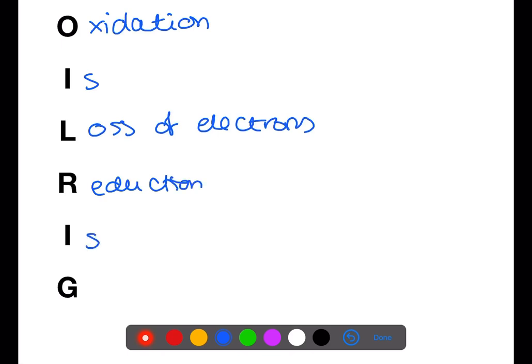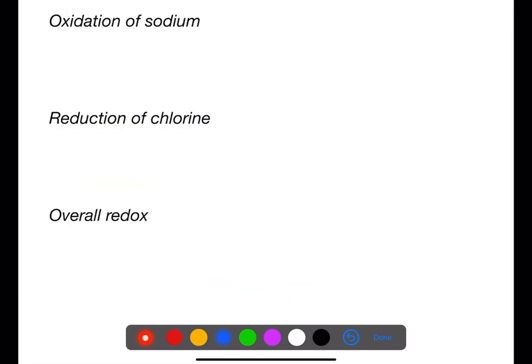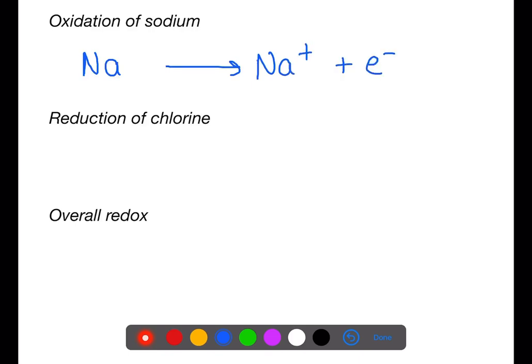Reduction is gain of electrons. Sodium is oxidized to sodium ions by losing the electron from the outer shell. This equation can be found on page 12 of the data book — it is written as a reduction in the data book; you just flip it over to get the oxidation. Sodium becomes a Na⁺ ion plus an electron. Chlorine is reduced by gaining an electron to fill the outer shell of electrons. Chlorine exists as a diatomic molecule.